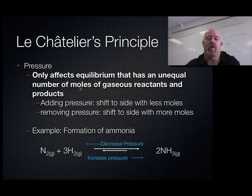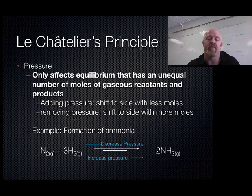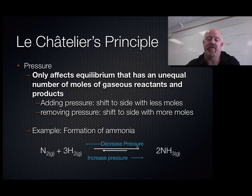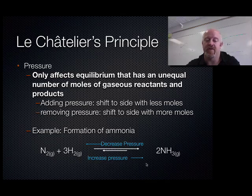Pressure only affects equilibrium that has an unequal number of moles of gases on the reactant or product side - we only worry about gases, not solids, liquids, or aqueous. If you add pressure, it shifts to the side with fewer moles to get rid of particles. If you remove pressure, it shifts to the side with more moles. For ammonia synthesis - nitrogen gas plus hydrogen gas making ammonia - if you increase pressure, you can make more ammonia. The ratio here is 1 + 3 = 4 moles of gas on the left versus 2 on the right. Decreasing pressure goes towards the high number of moles; increasing pressure goes towards the lower number of moles.